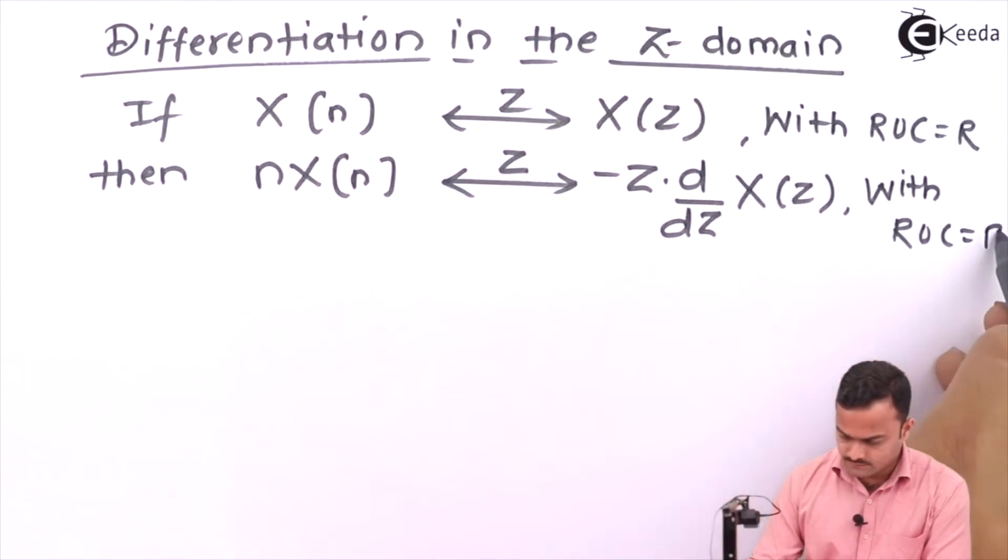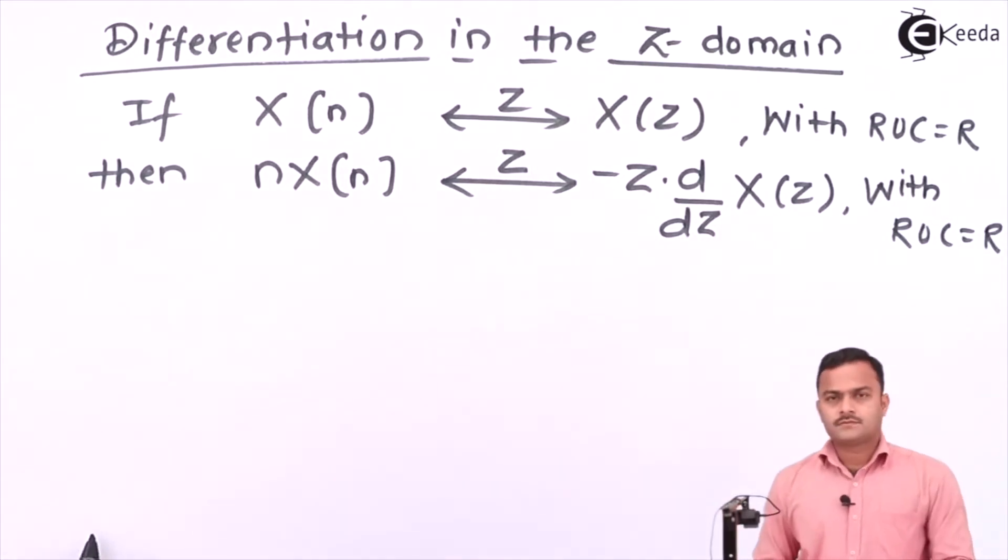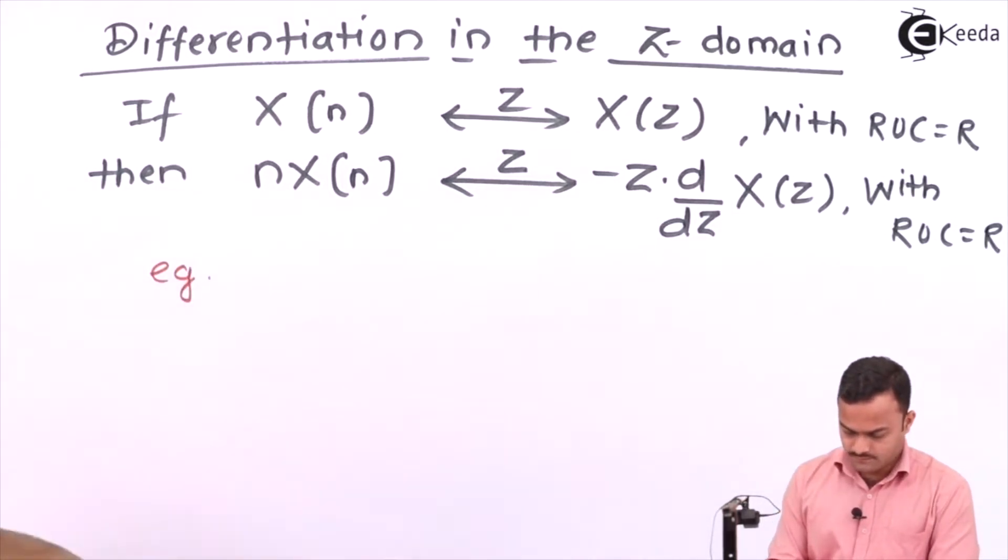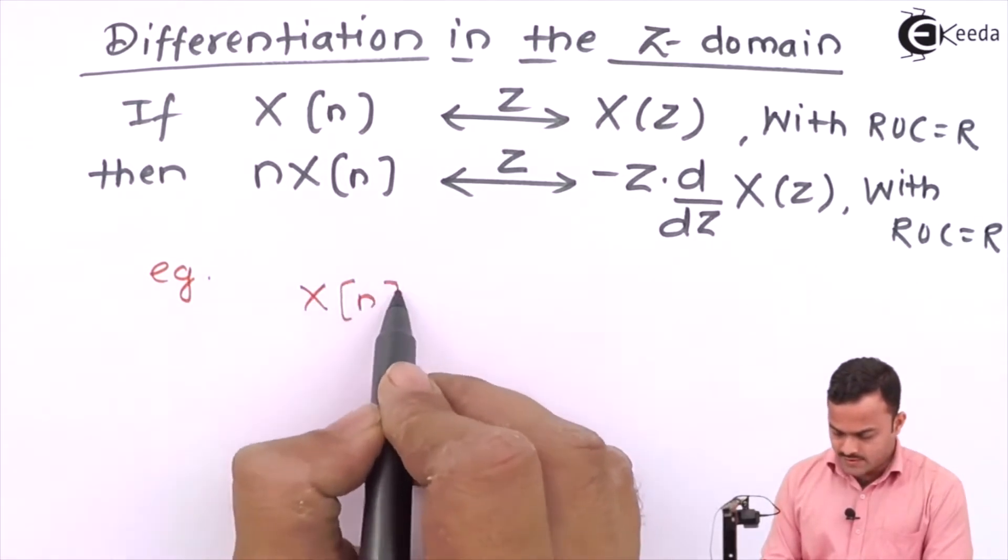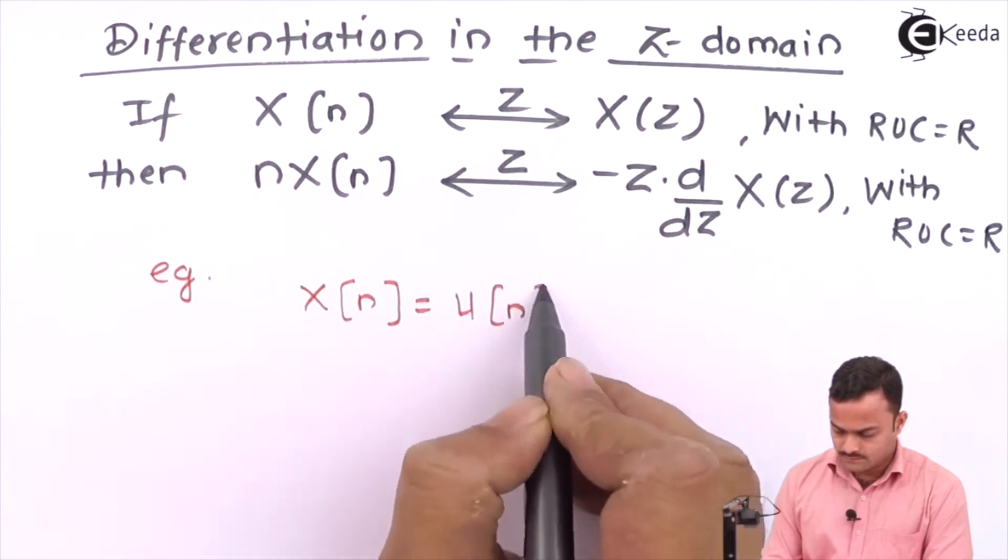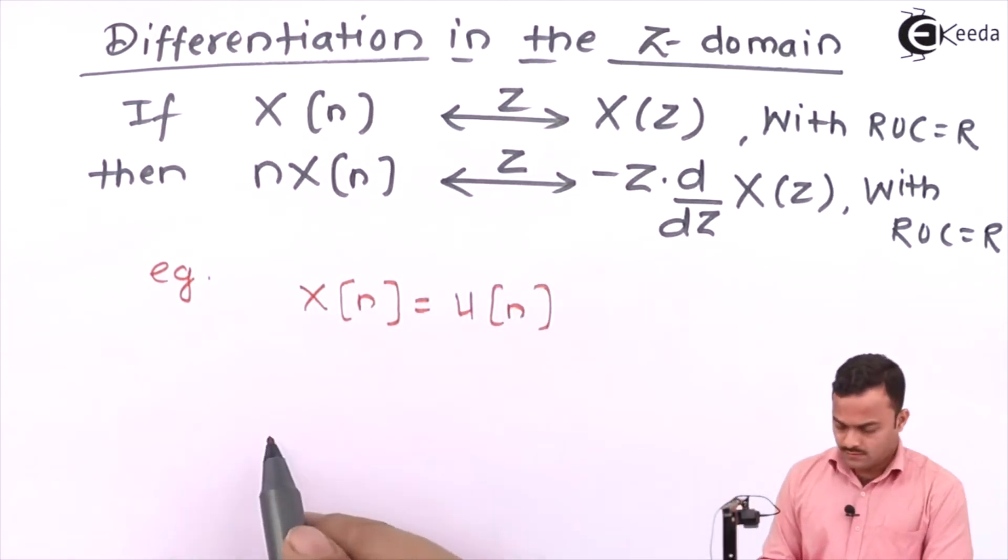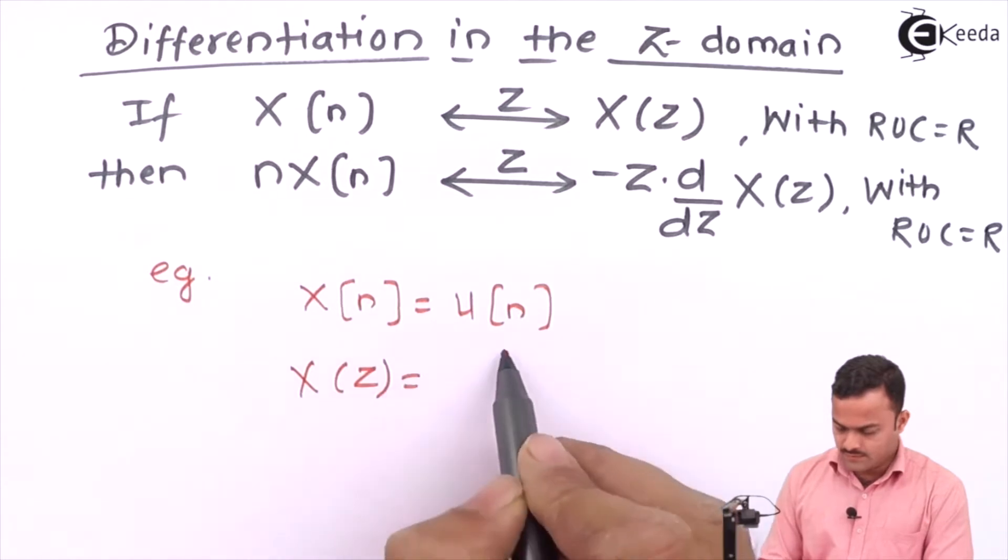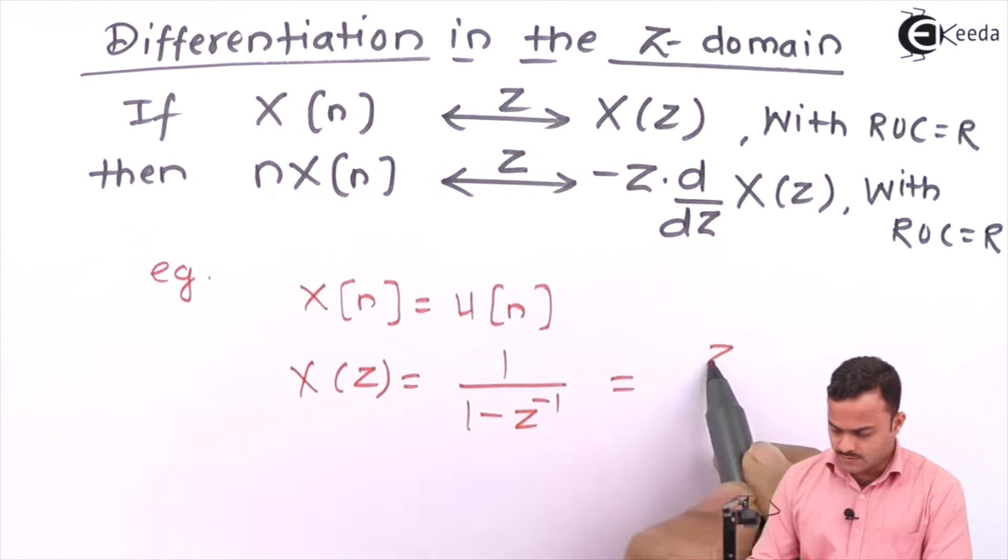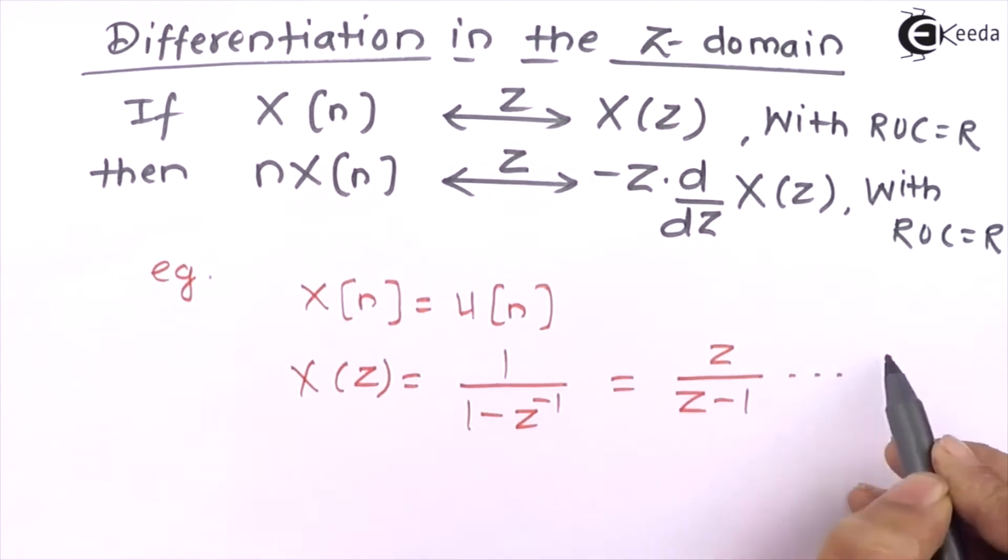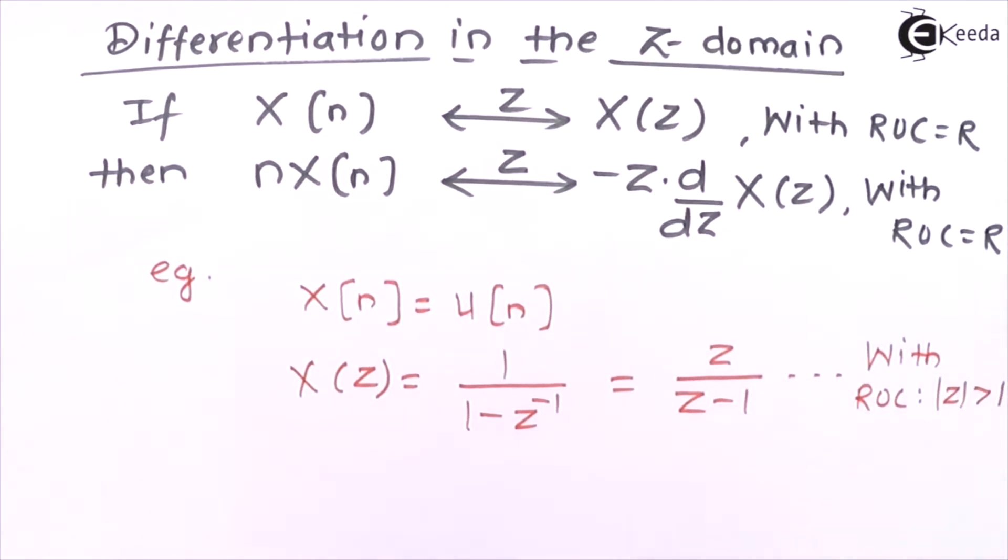Let's take an example. Just have X(n) as a simple function u(n), whose Z transform will be 1/(1 - z^-1), which is z/(z - 1), with ROC |z| > 1.